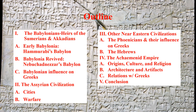After this, we'll talk about some smaller ancient Near Eastern civilizations, namely the Phoenicians and the Hebrews. These civilizations, while not geographically large or militarily powerful, were highly influential in other ways, which we'll discuss later in the video.